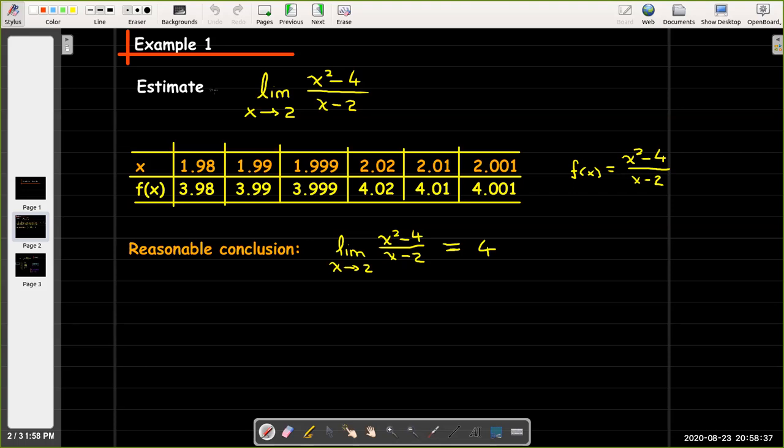So that's what I did. I chose these x values. I used some calculating tool to calculate what the y value would be and it looks like whether I approach from the left or from the right that the y coordinates or function values are getting closer and closer to 4.